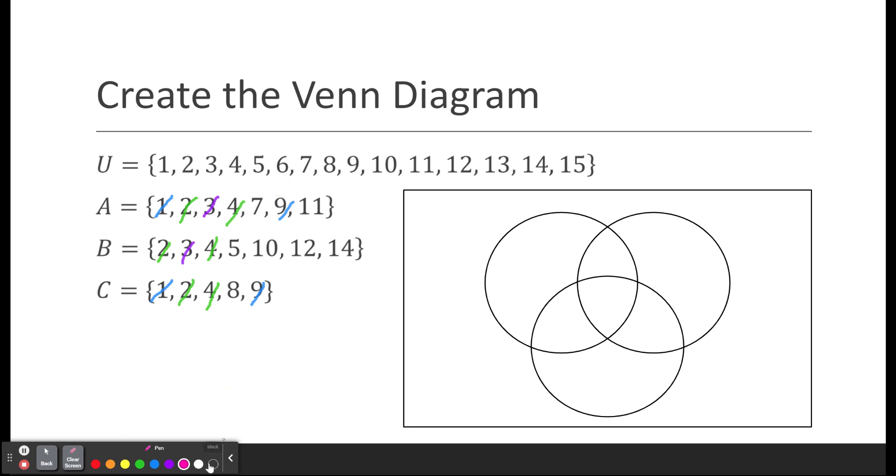And then I go through each of the individual ones. So in A, I'll be putting a 7 and an 11. And then in B, I'll be putting a 5, 10, 12, and 14. And then in C, I'll be putting an 8. And whatever I didn't use is going to go into the universal set. So I've already used 1, 2, 3, 4, 5, 7, 8, 9, 10, 11, 12, 14.